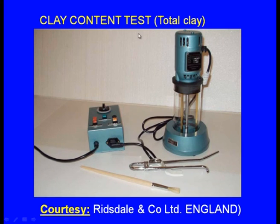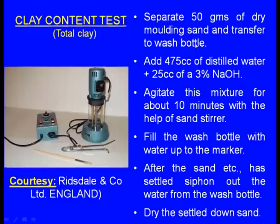Clay content has two terms: total clay, which is the sum of active clay and dead clay, or we can measure only the active clay. For the total clay content test, we separate 50 grams of dry molding sand and transfer it to a wash bottle. Then add 475 cc of distilled water plus 25 cc of 3 percent NaOH (sodium hydroxide). Agitate this mixture for about 10 minutes with the help of the sand stirrer. Then fill the wash bottle with water up to the marker. After the sand has settled, siphon out the water from the wash bottle.